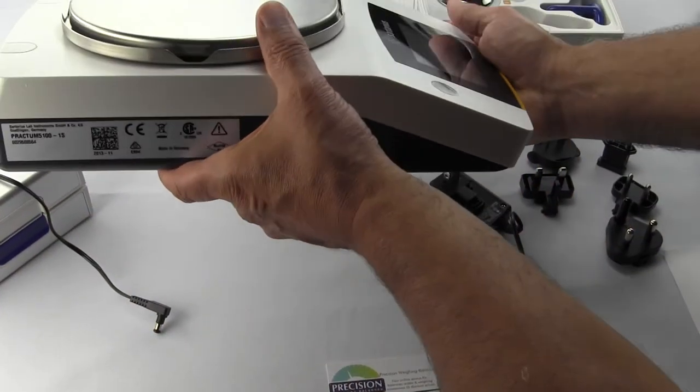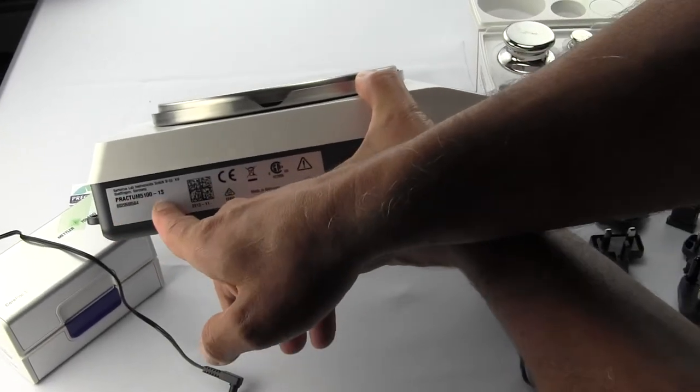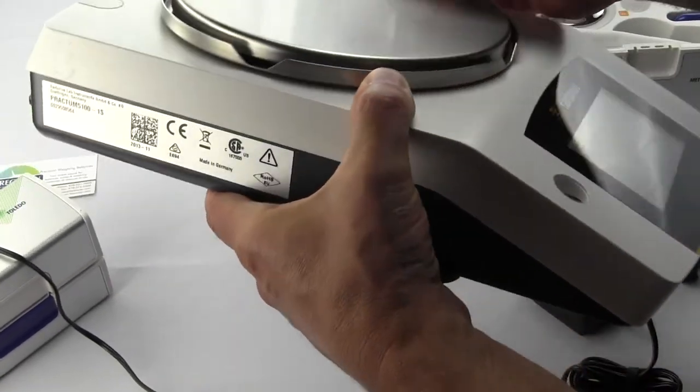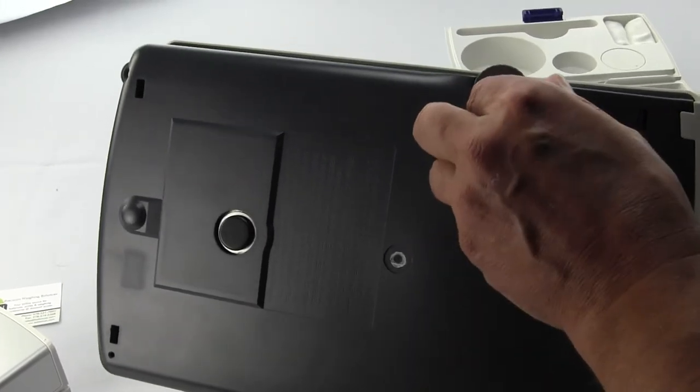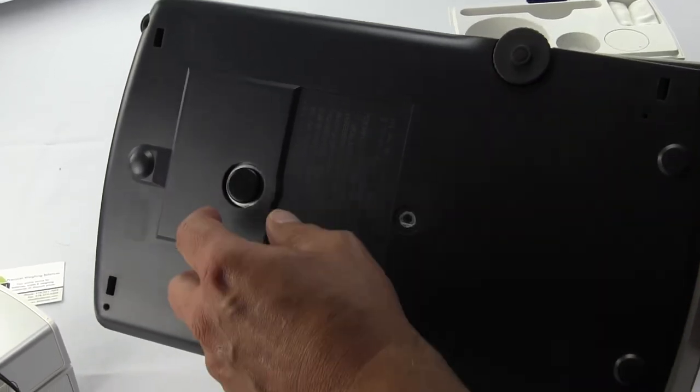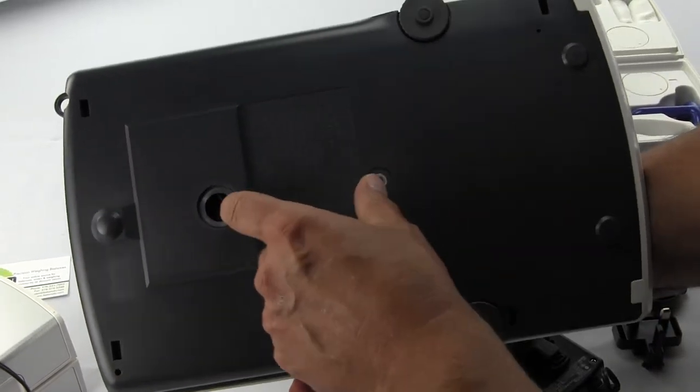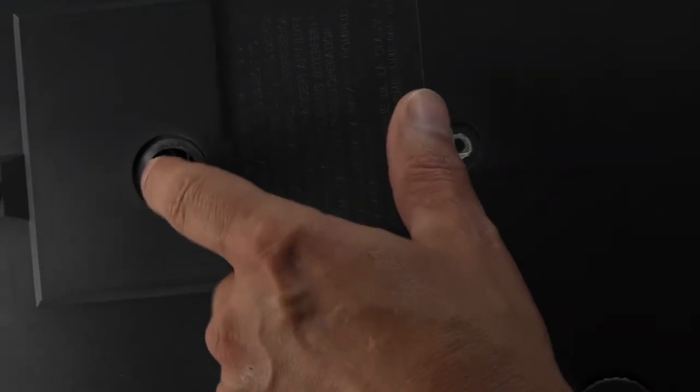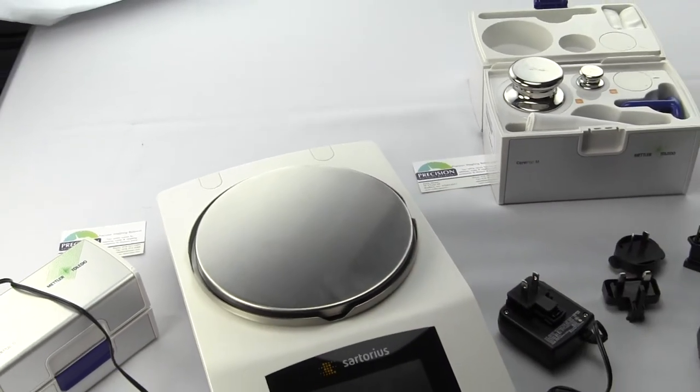On the side you can see Sartorius denotes the model number and serial number. On the bottom of the balance we have two adjustable feet for leveling. This port here has a little hanger that is used for specific gravity.